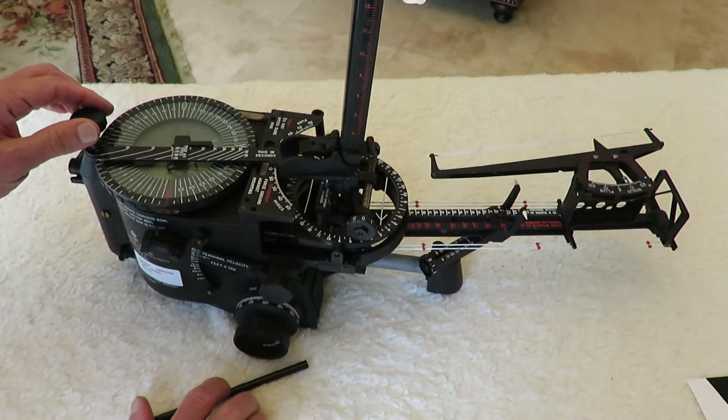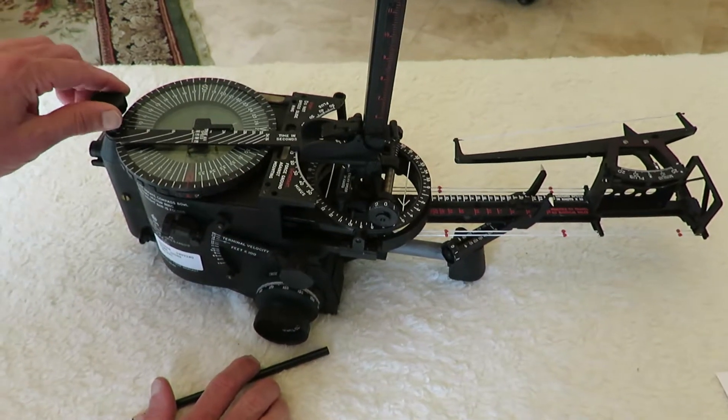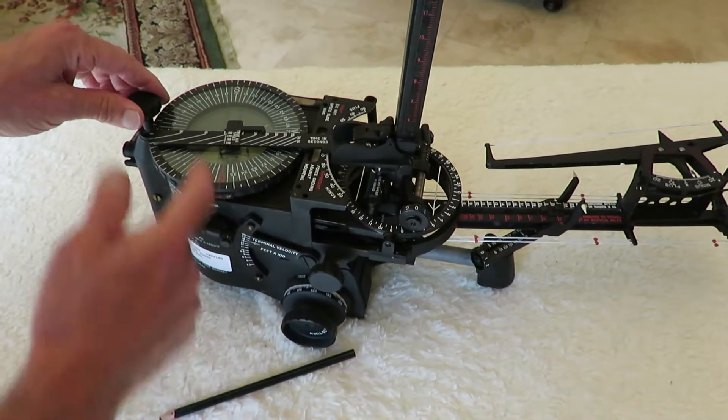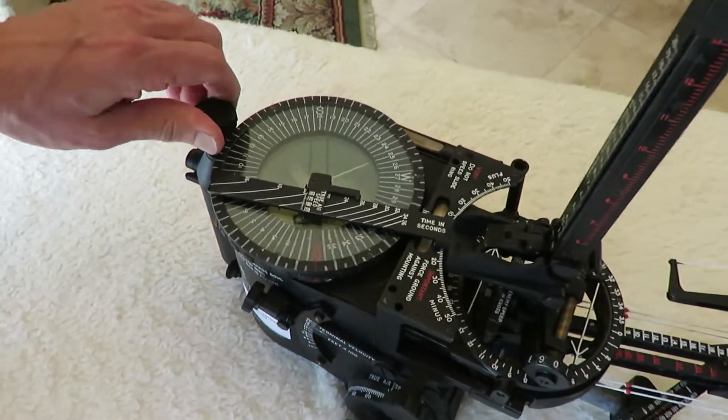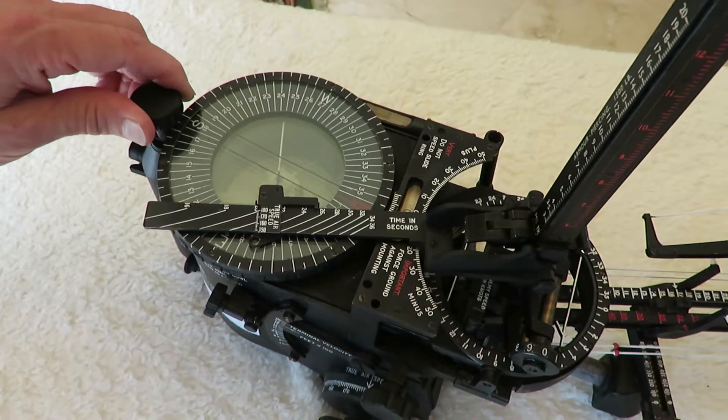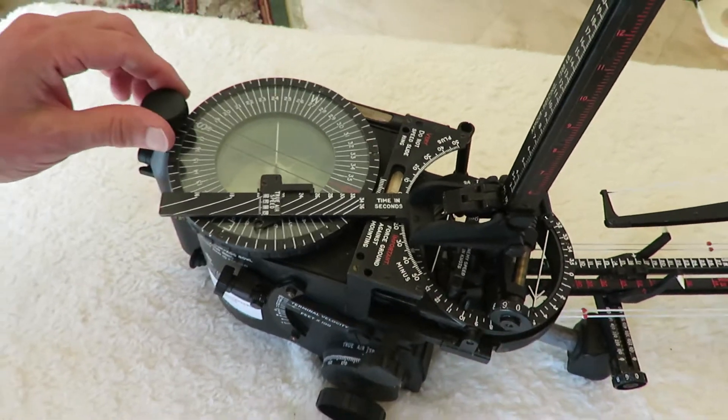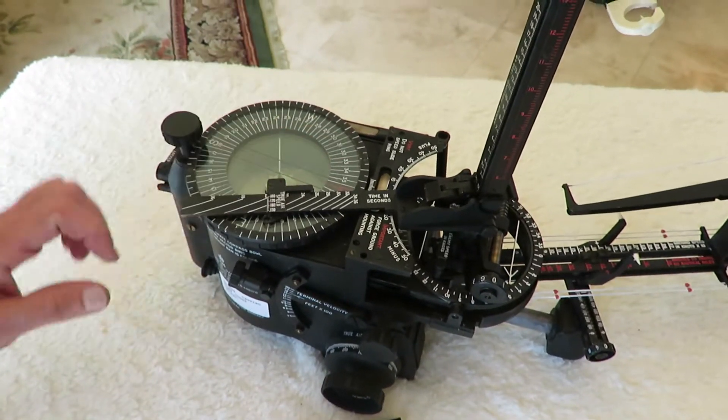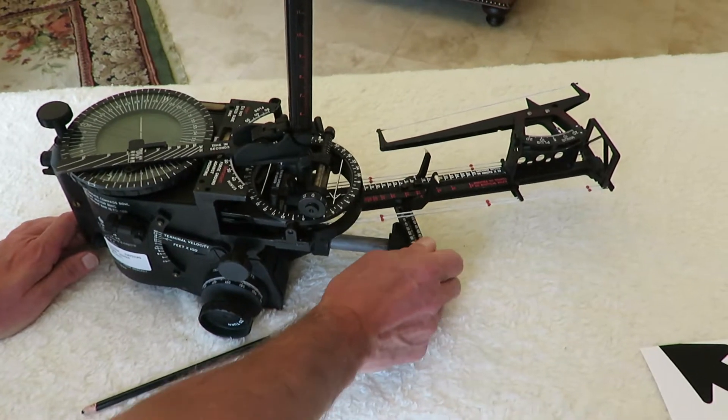We're going to turn the compass bowl using our compass clutch milled head until the wind arrow is perpendicular to the bomb site. It doesn't matter which direction you turn it because what we're going to do is adjust this to obtain our wind speed, and it doesn't matter whether we're coming from this direction or this direction. Now that the wind arrow is perpendicular to the bomb site, we will adjust the wind speed.